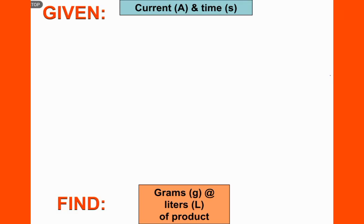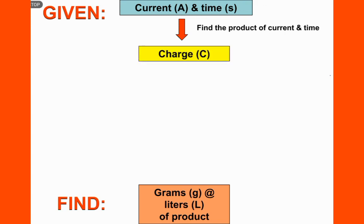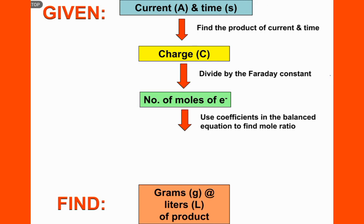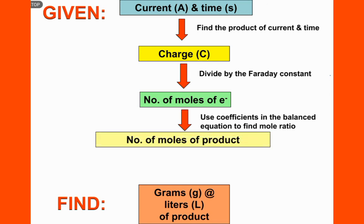In conclusion, to determine the grams or liters of product from electrolysis when given current and time: first, find the charge by multiplying current by time in seconds to get Coulombs; then divide by the Faraday constant to get moles of electrons; use the coefficients in the balanced equation to find the mole ratio; determine moles of product; and finally use molar mass or molar volume to get grams or liters of product.